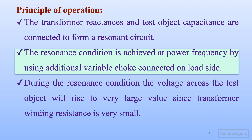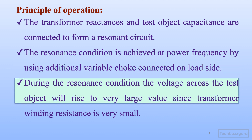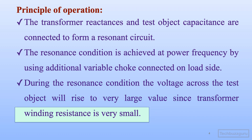The resonance condition is achieved at power frequency by using an additional variable choke connected on the load side. The value of this variable inductance is adjusted so that the circuit inductance, along with the variable inductance, forms a resonant circuit with the test object capacitance. During the resonance condition, the voltage across the test object rises to a very high value, since the transformer winding resistance is very small. This resonance condition causes the circuit to induce very high voltages across the test object.